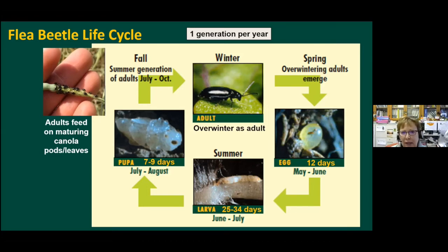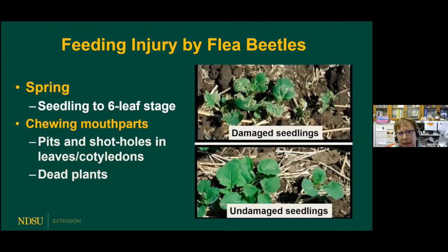In general, the summer generation is not economic, but there has been an economic threshold developed. You need about 350 to 400 beetles per plant for it to be economic to spray. The most critical stage is the seedling stage in the spring — that is the most susceptible period for the spring flea beetles emerging from overwintering sites. They have chewing mouthparts and cause pitting and defoliation in the leaves, and if the infestation is very severe, they'll chew the plant right down to the ground. Once canola reaches the six-leaf stage, it can tolerate some flea beetle pressure.